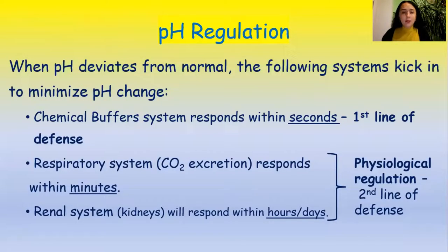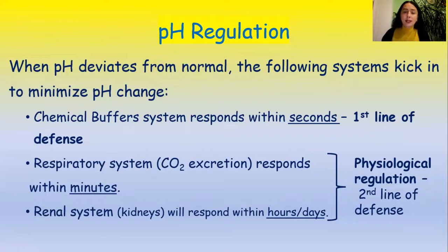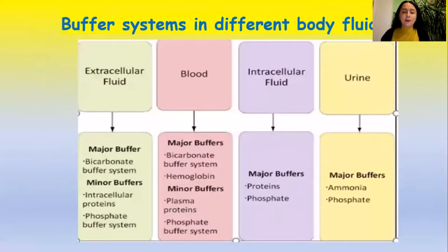So how is pH regulated? In our body there are different complicated systems responsible for pH regulation. The fastest of them is the chemical buffer system, which responds within seconds. It's like a first line of defense against pH changes. This chemical buffer system consists of different buffers present in body fluids — extracellular and intracellular fluids, blood and urine.